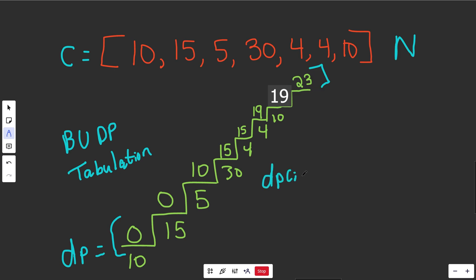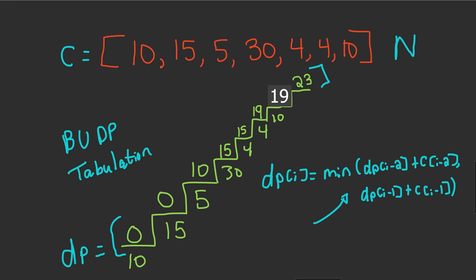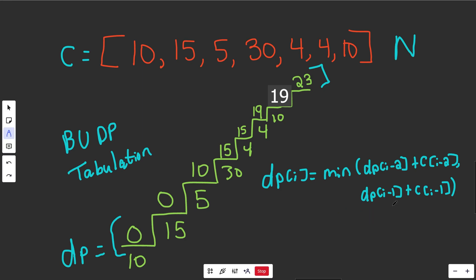We set DP at i equal to the minimum of: DP at i minus 2 plus cost at i minus 2 (getting there from two steps back), and DP at i minus 1 plus cost at i minus 1 (getting there from one step back). This is the bottom-up approach, which is often more intuitive. We'll also write the top-down solution using this same formula as a recurrence relation.